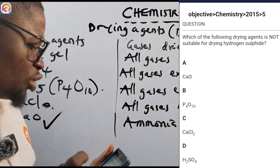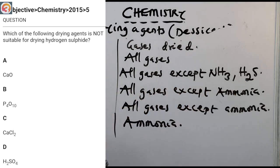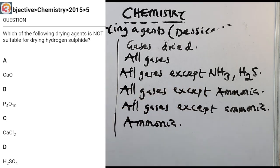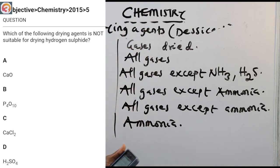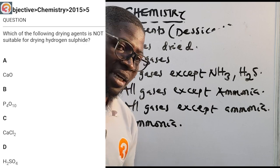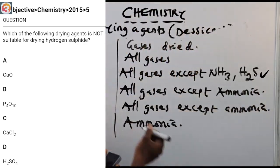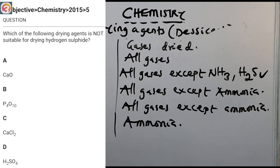Next question: which of the following drying agents is not suitable for drying hydrogen sulfide? As we can see, H2SO4 does not dry hydrogen sulfide. The options are A) CaO, B) P4O10, C) CaCl2, D) H2SO4. The correct answer is D — H2SO4 — it is not suitable for drying hydrogen sulfide.